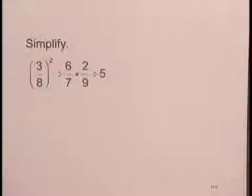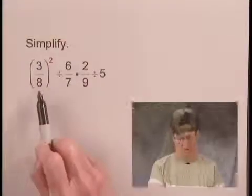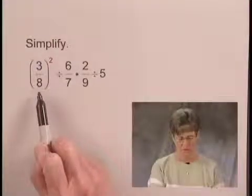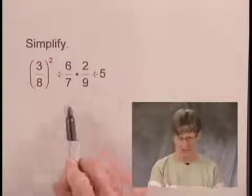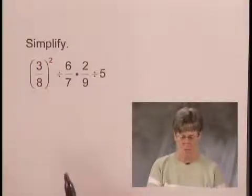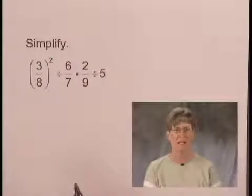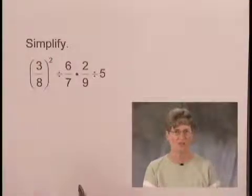We'll do a problem that involves order of operations. We're asked to simplify this expression. When we look at it, we see that we have an exponential expression to simplify, and then we have some divisions and a multiplication. The order of operations says that we evaluate exponential expressions before we multiply or divide.